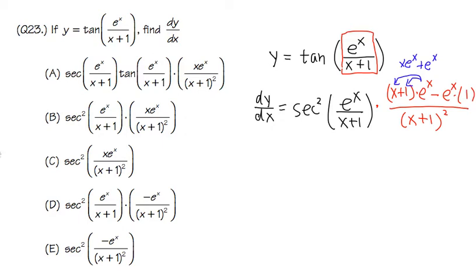And now we can work out the rest. This part stays the same. Secant square of e to the x over x plus 1. I'll multiply this with x plus 1 parenthesis square. And look at the top. Combining terms on the top. The e to the x minus e to the x times 1, which is just e to the x. These two cancel out. And I will just be left with x e to the x. Like that.